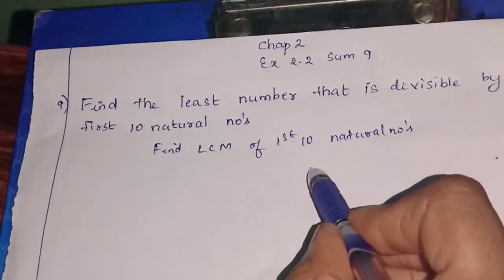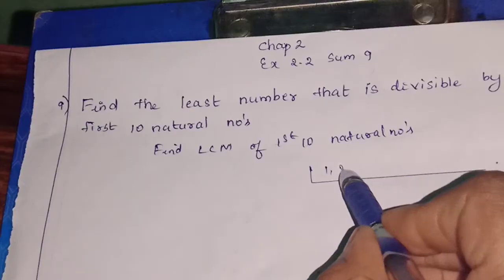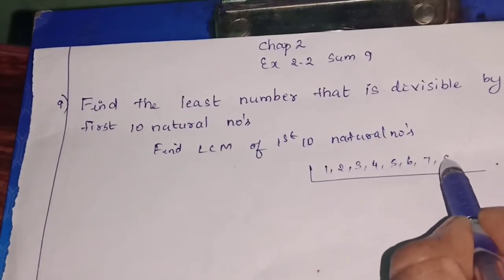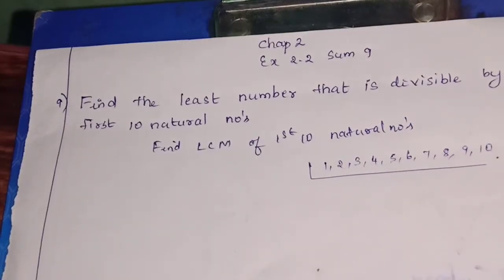So you know how to find LCM. So 1, 2, 3, 4, 5, 6, 7, 8, 9, 10 - first 10 natural numbers.